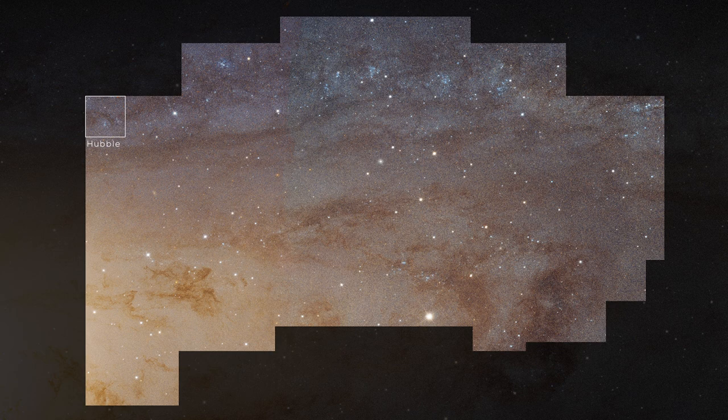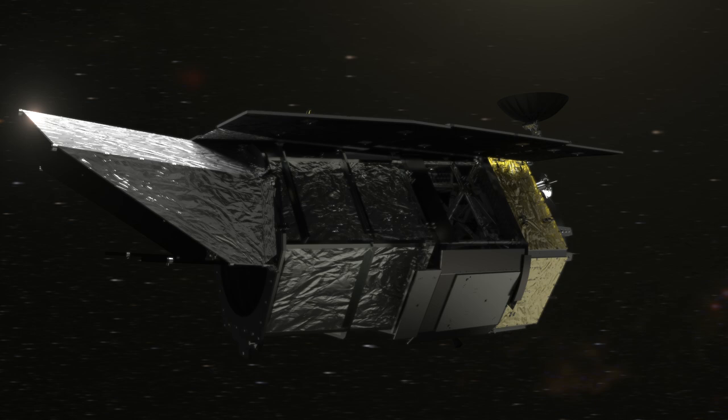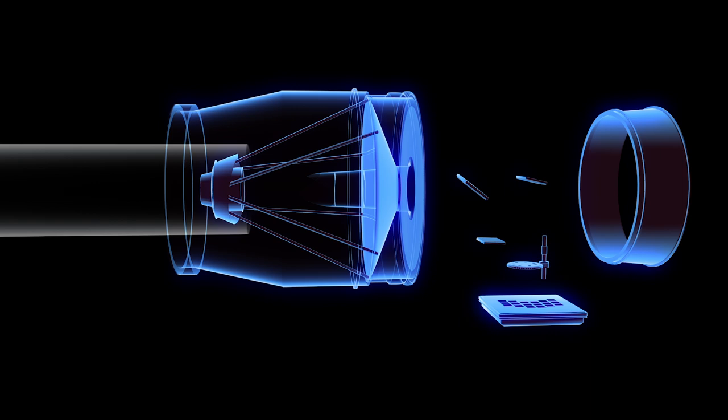Despite this incredible power, the basic design is the same as telescopes around the world. Light enters through Roman's 2.4-meter aperture and is reflected and focused by the curved main mirror, which is also the largest mirror in the telescope.